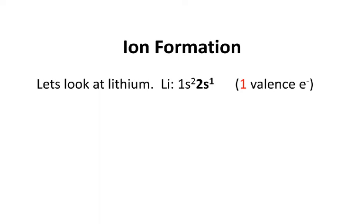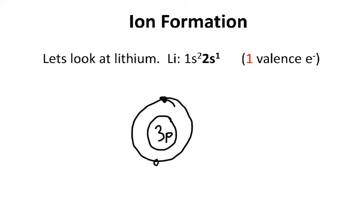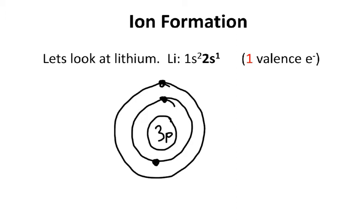Let's look at ion formation. If we look at lithium — lithium has atomic number three, so it has three electrons. Its electron configuration is 1s2, 2s1, with one valence electron. Let's draw a picture. We're going to put the three protons in the middle, then draw the first shell. I'm doing these like Bohr models just because it's really a lot easier to show you what they look like. So it has one electron in that last shell — one valence electron.